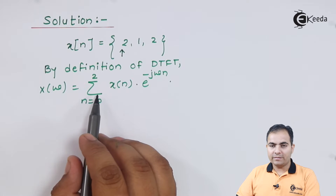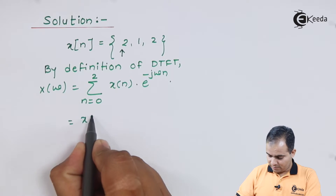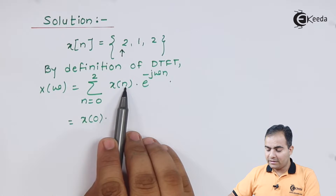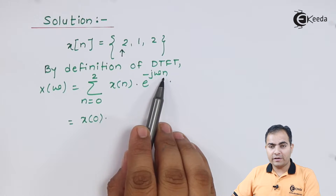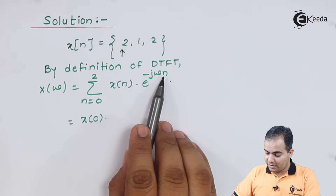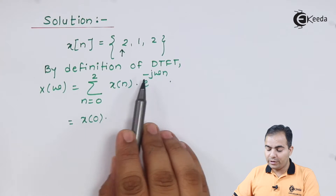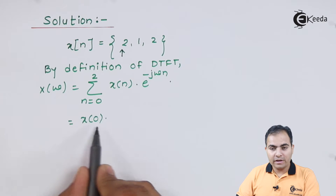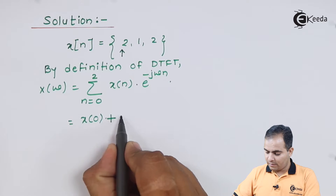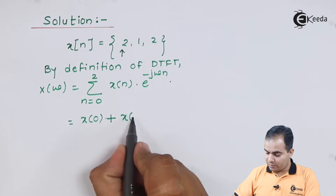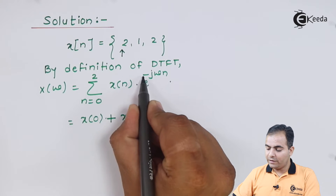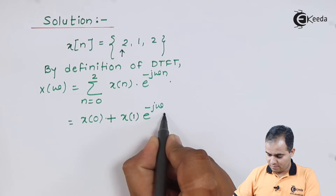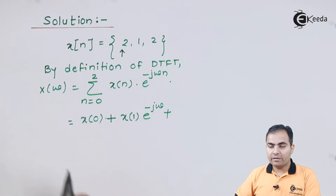Now I will break this summation. First, substituting n=0: the exponent becomes 0 and e to the power 0 is always 1, so we write x[0]. Next, for n=1 we have e to the power minus j omega. Then substituting n=2 we get the corresponding term.